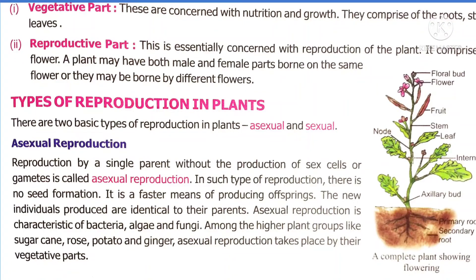Some plants have both female and male reproductive parts, whereas in some plants there is only a male or female reproductive part of the flower. Generally, reproduction in plants takes place in two ways: asexual and sexual. Reproduction is divided into two parts — asexual reproduction and sexual reproduction.